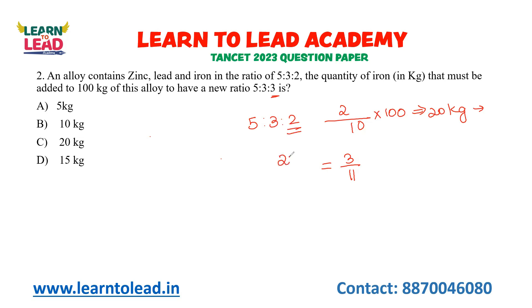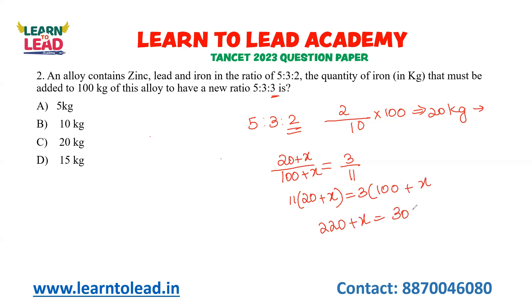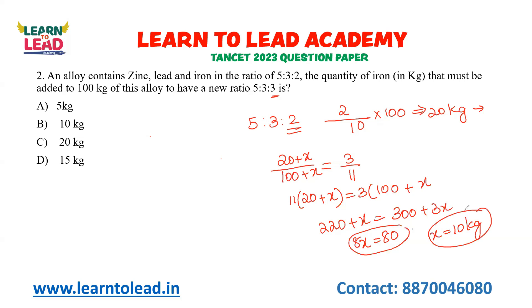Iron is 3 parts out of 11. So the equation is: (20 + x) divided by (100 + x) equals 3 by 11. Cross-multiplying: 11 into (20 + x) equals 3 into (100 + x). So 220 + 11x equals 300 + 3x. Therefore 8x equals 80, and x equals 10 kg. You should know these basic concepts. This is a question based on alligation.